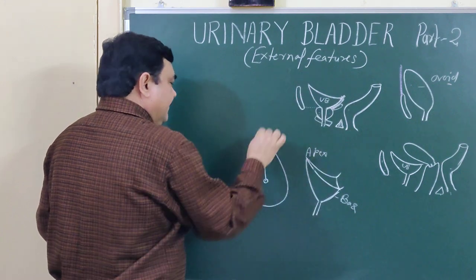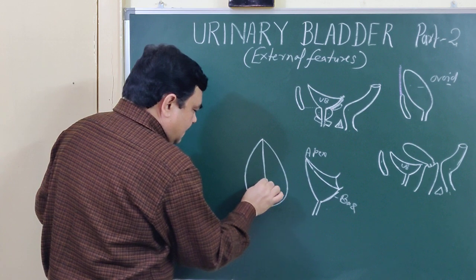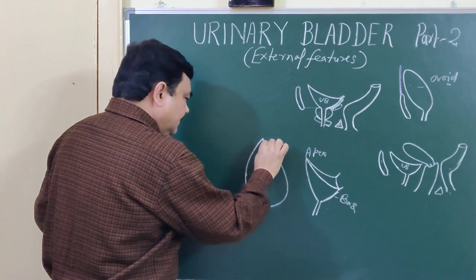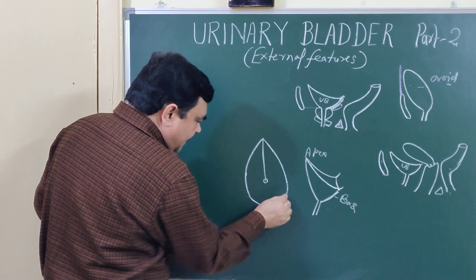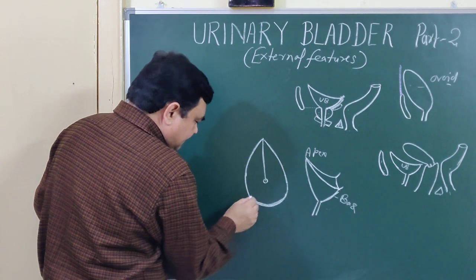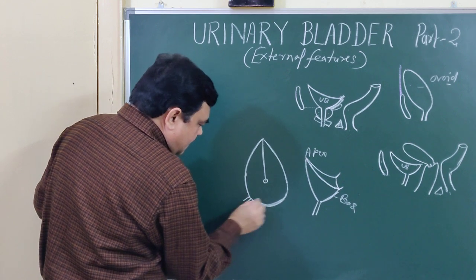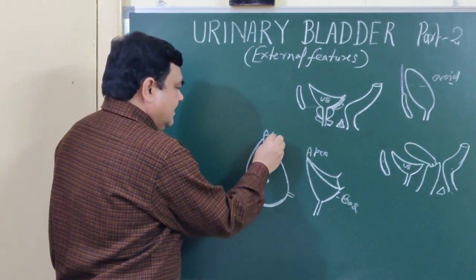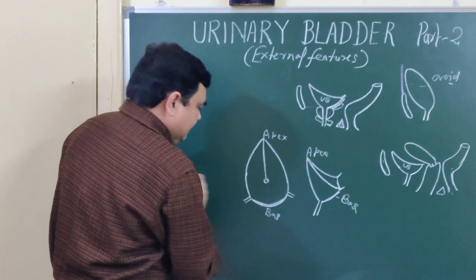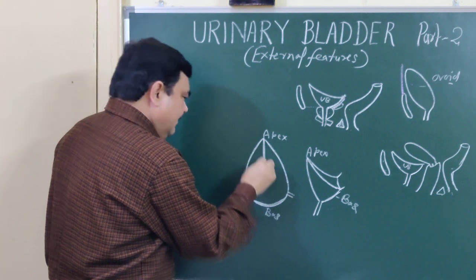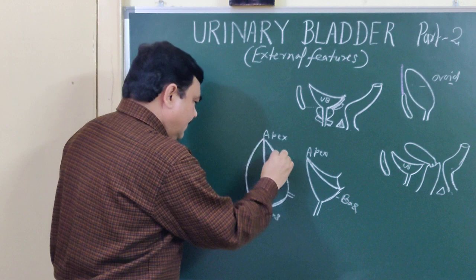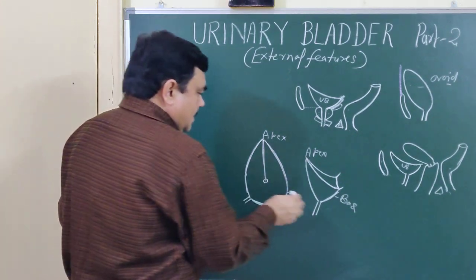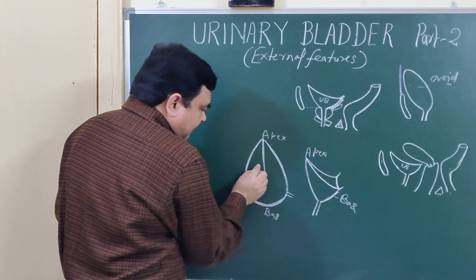From the apex to the neck, this is the anterior border. There are right and left lateral borders. This is the posterior surface. Here you can see the apex, the base, the anterior border, the lateral border, and the posterior border.